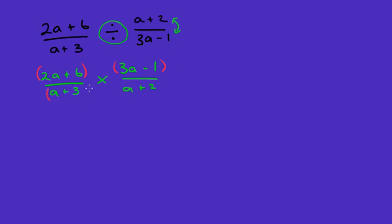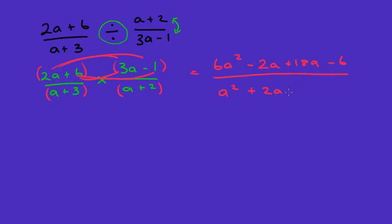Now we times the tops and times the bottoms. Two a times three a is six a squared, two a times negative one is negative two a, six times three a is eighteen a, and six times negative one is negative six — all over a times a is a squared, a times two is two a, three times a is three a, and three times two is six. So the denominator expands to a squared plus five a plus six.